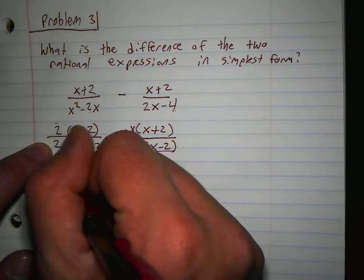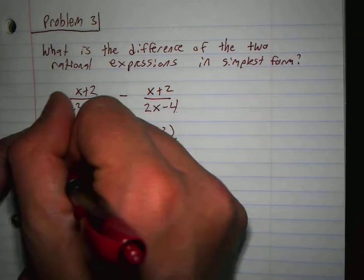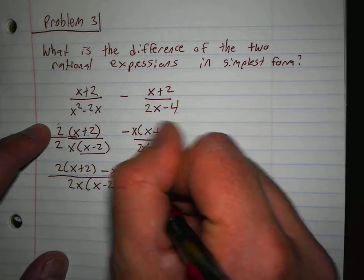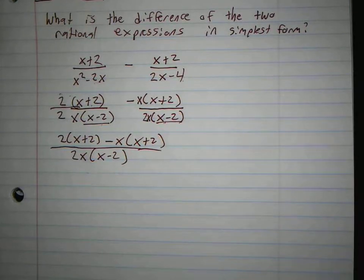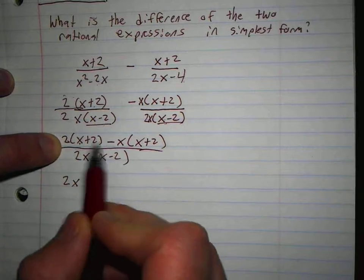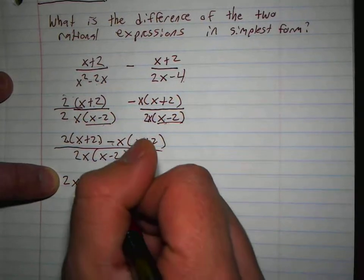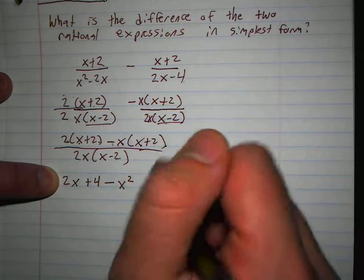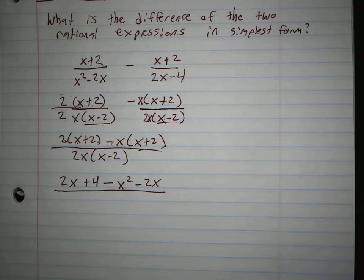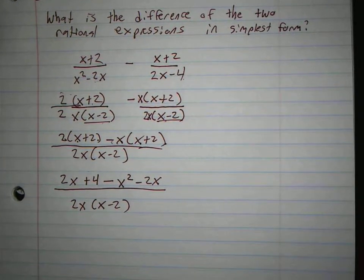Did you combine the numerators? And from there, there should be algebra 1 stuff. Hey, that was the hardest part. You should know how to distribute. 2 times x, 2x. 2 times 2, 4. Here. Minus x times x, minus x squared. Minus x times 2, minus 2x. And remember, like I said earlier, you never distribute the denominator. So you just keep it the same.